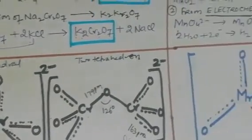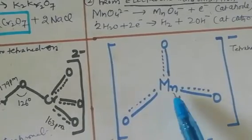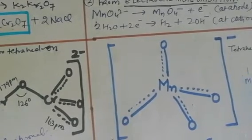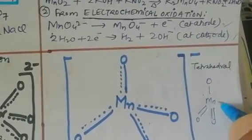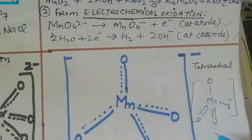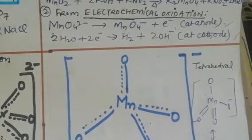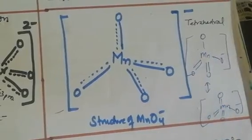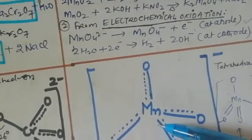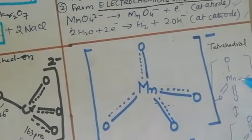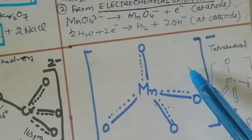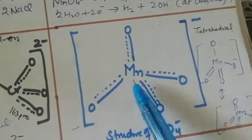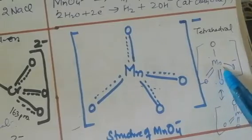The permanganate ion MnO₄⁻ is also tetrahedral, similar to chromate, with manganese bonded to four oxygen atoms. The resonance structure of permanganate shows double bonds with oxygen. Manganate (MnO₄²⁻) is paramagnetic with one unpaired electron, while permanganate (MnO₄⁻) is diamagnetic. Pi bonding occurs by overlap of the p orbitals of oxygen with the d orbitals of the metal.